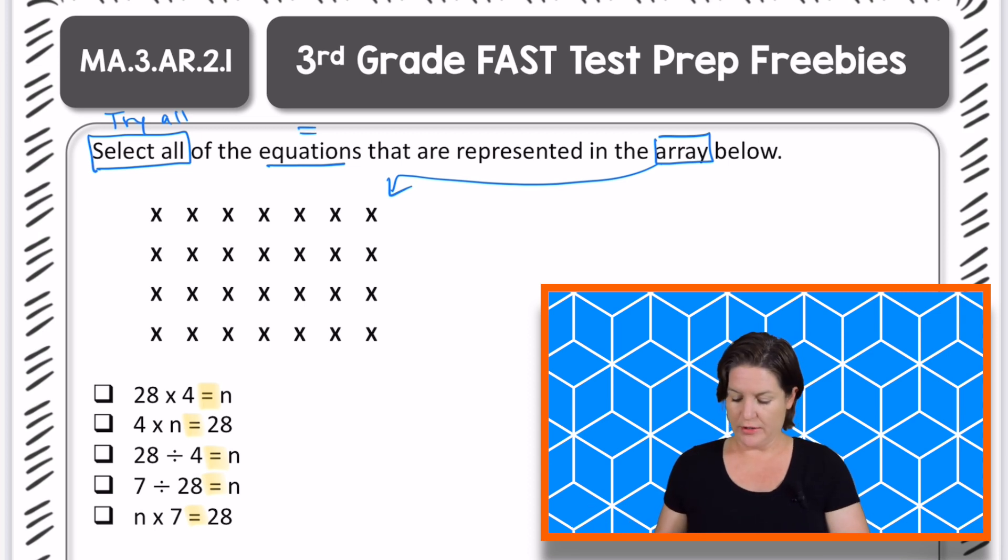Alright. So let's see what we've got here. We have one, two, three, four going down, four X's going down. And then we have one, two, three, four, five, six, seven going across.